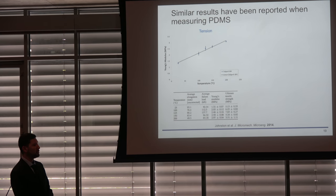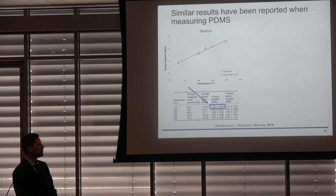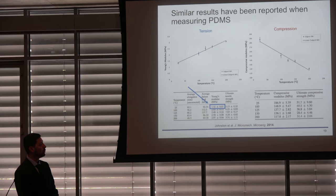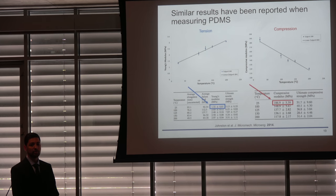This sort of tension-compression difference has been shown before in PDMS samples. When PDMS was measured in tension, an elastic modulus of 1.32 MPa was measured. But when measured in compression, a compressive modulus of 187 MPa was measured—two orders of magnitude higher. We measured about one order of magnitude difference in our tests.